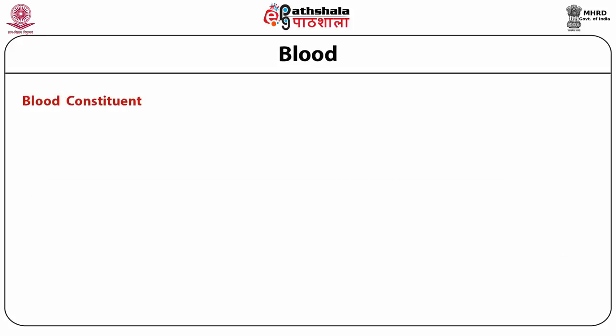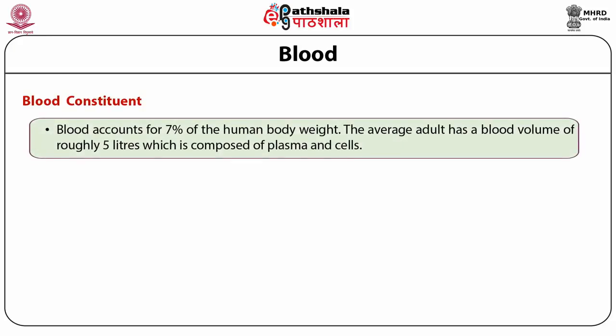Blood constituents and blood composition: blood accounts for 7% of the human body weight. The average adult has a blood volume of roughly 5 liters, composed of plasma and cells. These blood cells consist of red blood cells (RBCs or erythrocytes), white blood cells (WBCs or leukocytes), and platelets (thrombocytes).